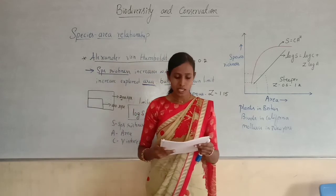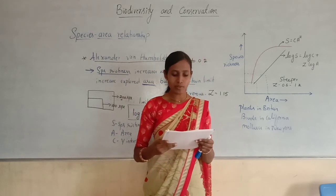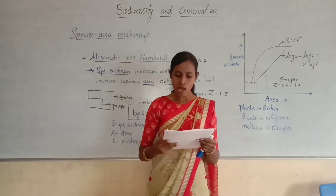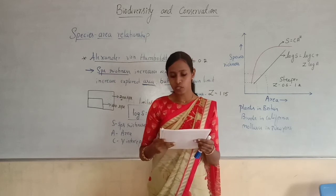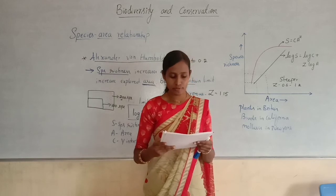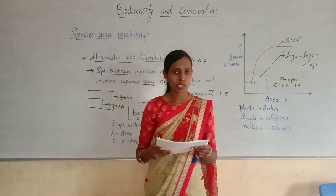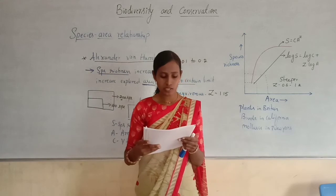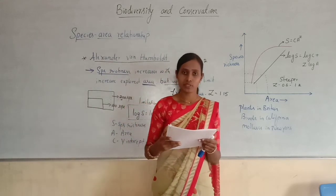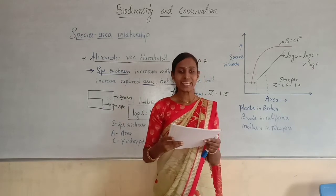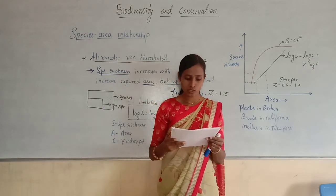Question 37: The observation of the species-area relationship was given by Humboldt after his pioneering and extensive exploration in the wilderness of — Option A: South American jungles; Option B: North American jungles; Option C: South African jungles; Option D: East African jungles. He explored the wilderness in the South American jungles, so Option A is correct.